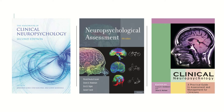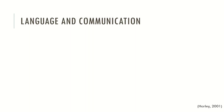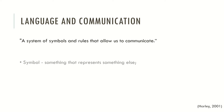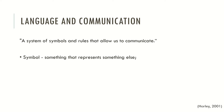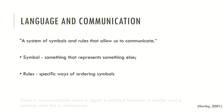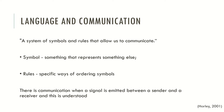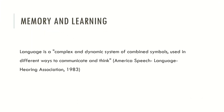Now let's take a look at language and communication. Language may be described as a system of symbols and rules that allow us to communicate. A symbol is something that represents something else, just like a flag or just like a letter, which represents a sound. Language has rules, which are specific ways of ordering symbols. There is communication when a signal is emitted between a sender and a receiver and this signal is understood. Language is a complex and dynamic system of combined symbols used in different ways to communicate and think. This is the standard definition of the American Speech Language Hearing Association.